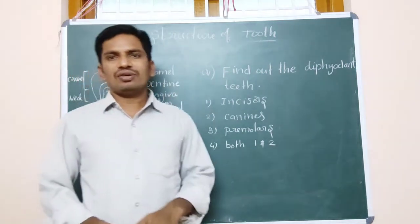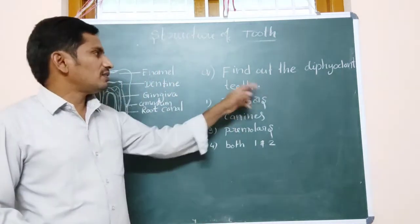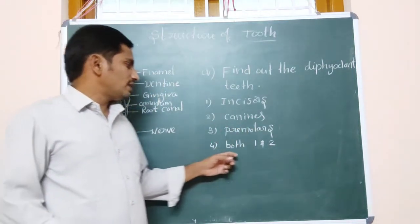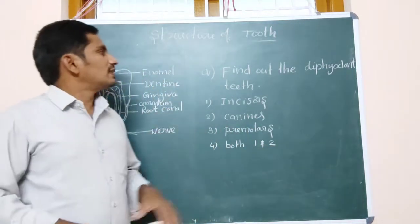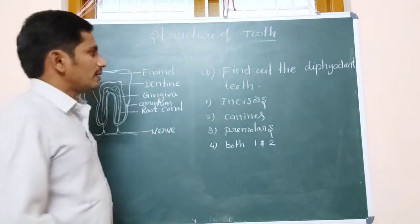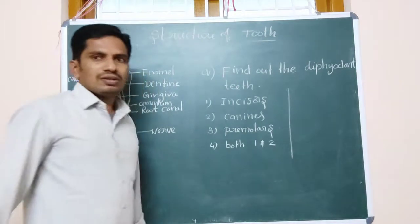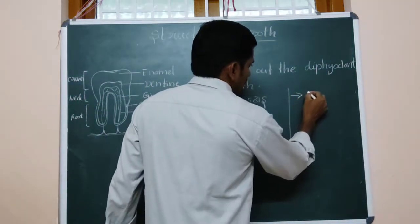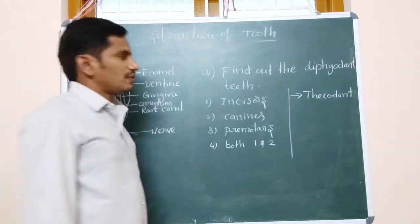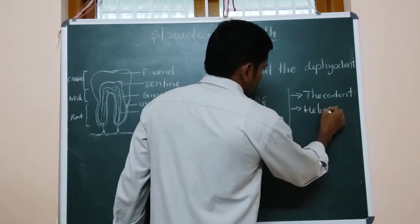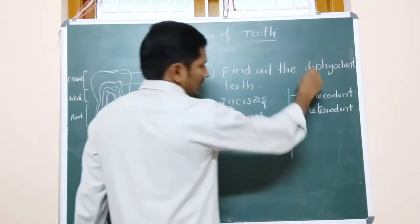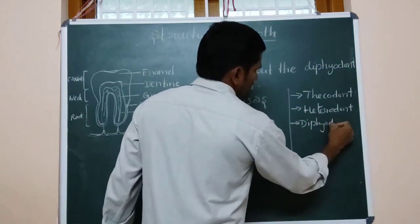We have 4 kinds of teeth present. The options given are: option 1 - incisors, option 2 - canines, option 3 - premolars, and option 4 - both 1 and 2. To solve this objective, we should know about the complete structure of tooth and types of tooth. Human teeth are classified under three types: thecodont, heterodont, and diphyodont.